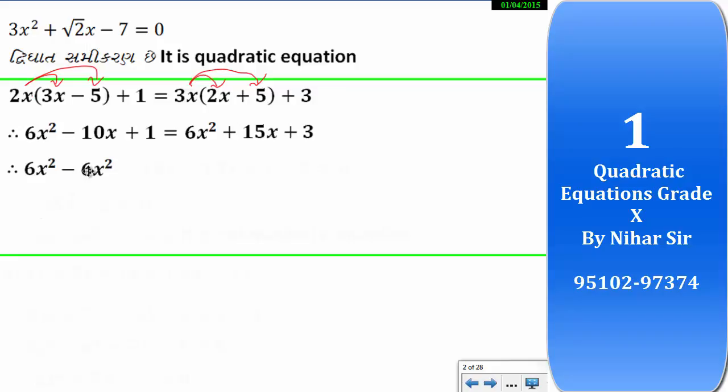So, 6x squared minus 6x squared, we can cancel both. So, it will be cancelled. I am canceling in advance. Minus 10x, this 15x comes to this side. Minus 15x plus 1 comes to this side. 3 comes to this side minus.